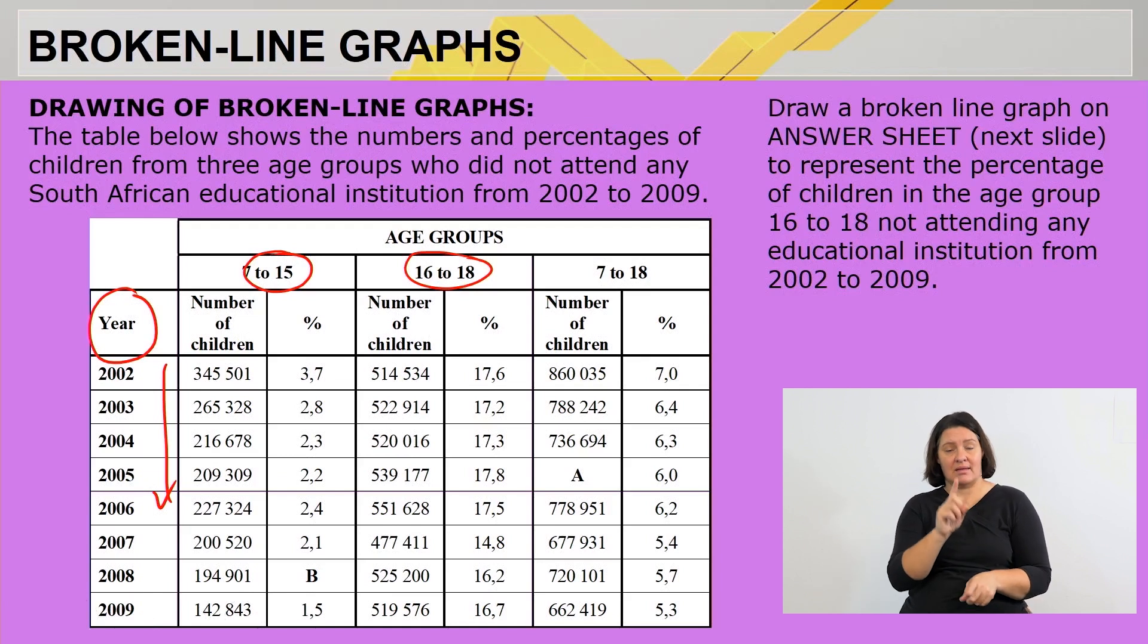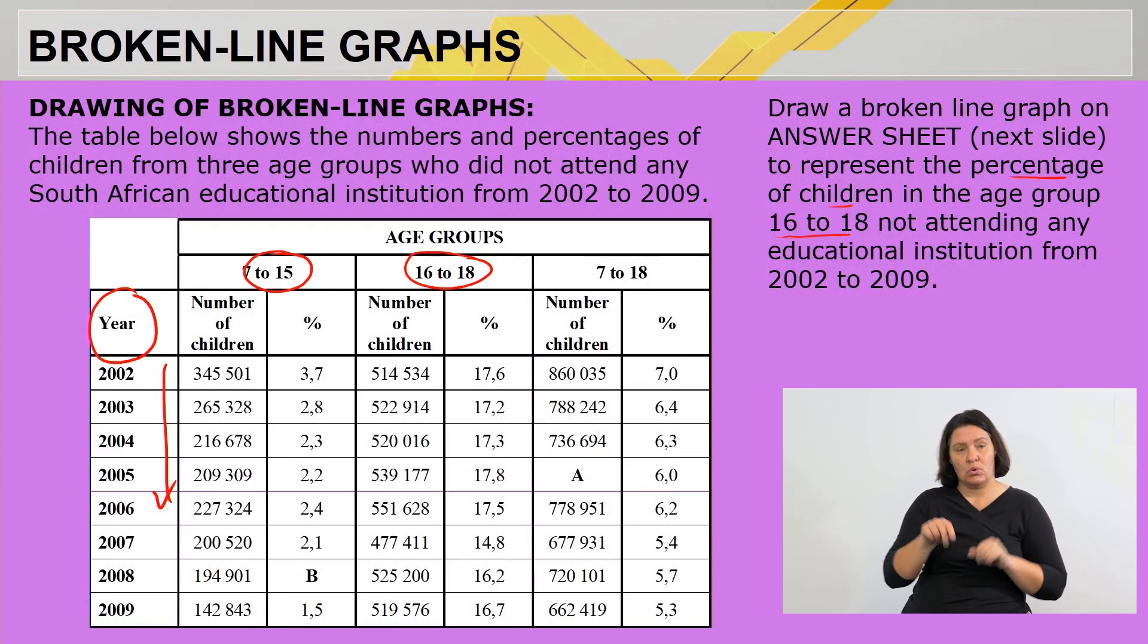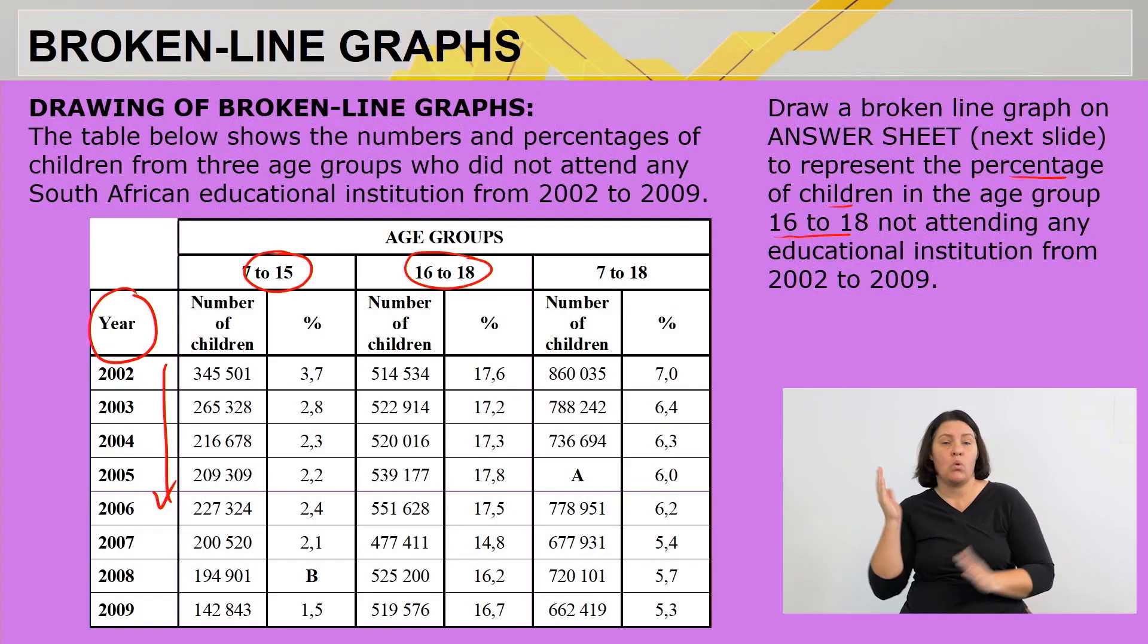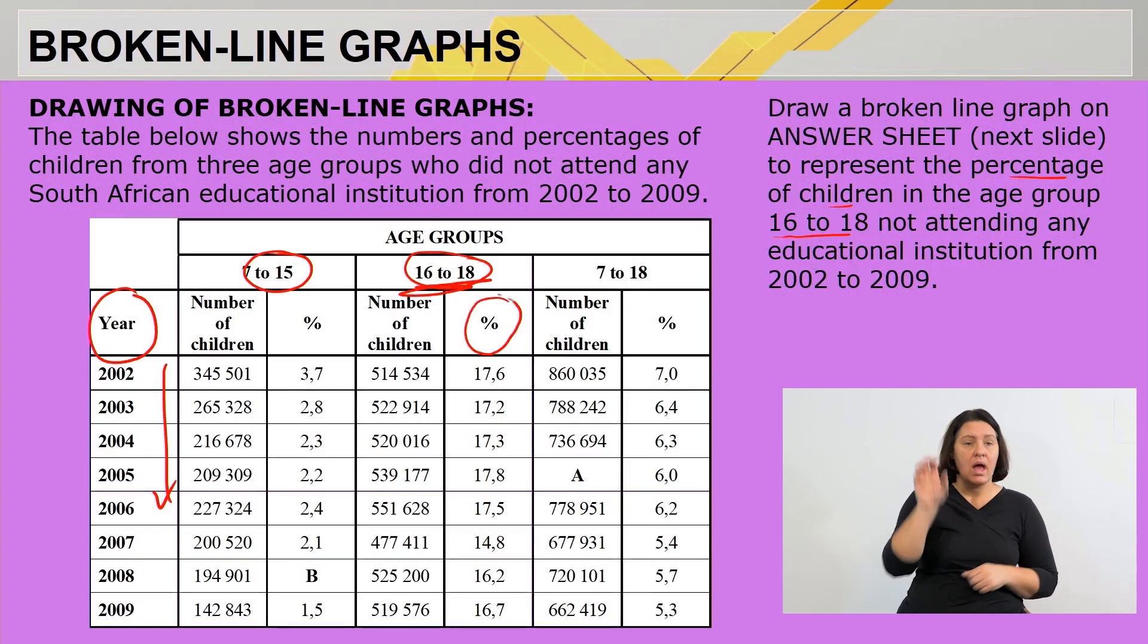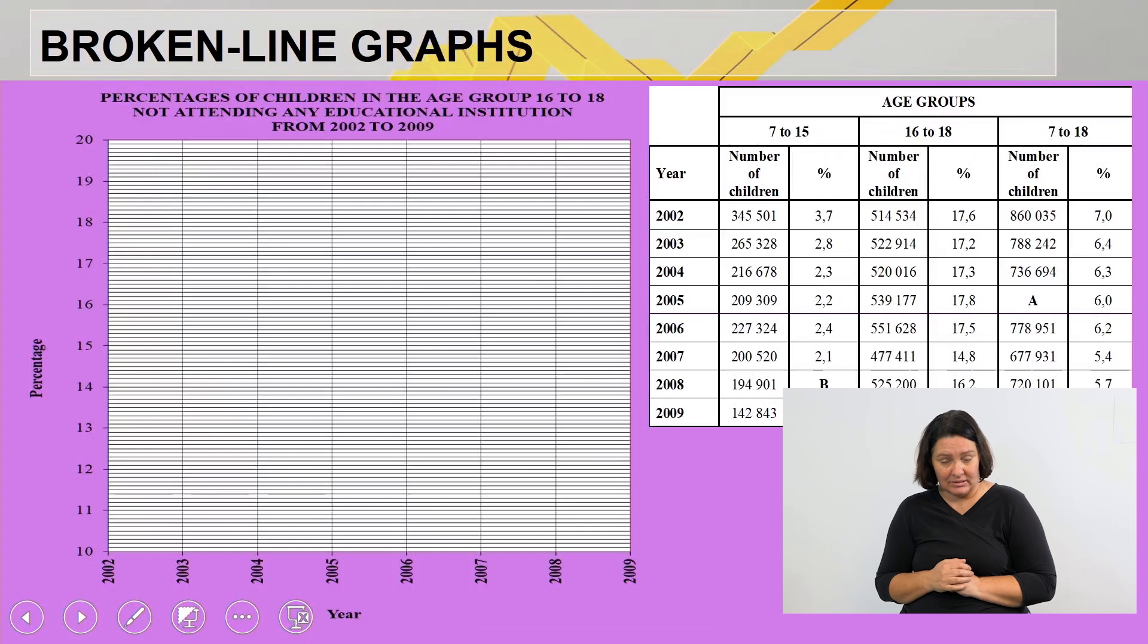What is the question? It says draw a broken line graph on the answer sheet to represent the percentage of children in the age group 16 to 18 not attending any of the institution from 2002 to 2009. So basically we're working with this age group. Also important, we work with the percentage, not the number of children.